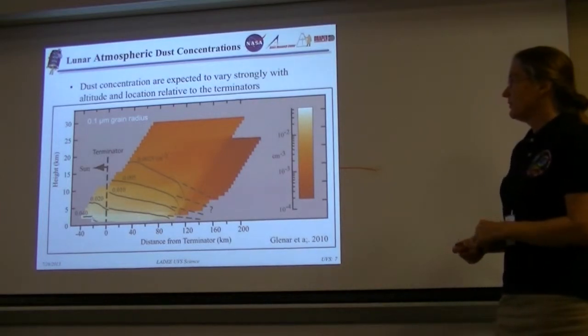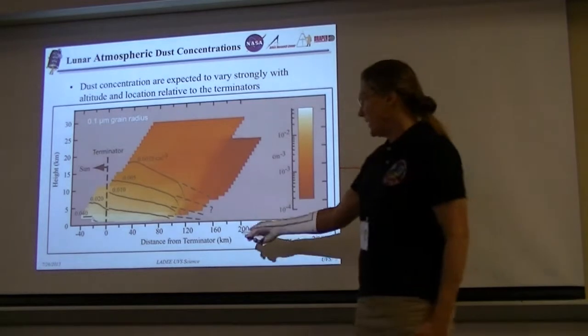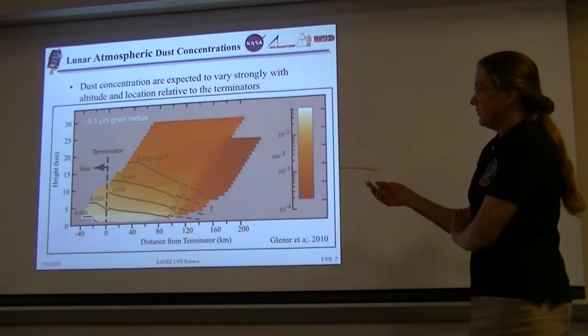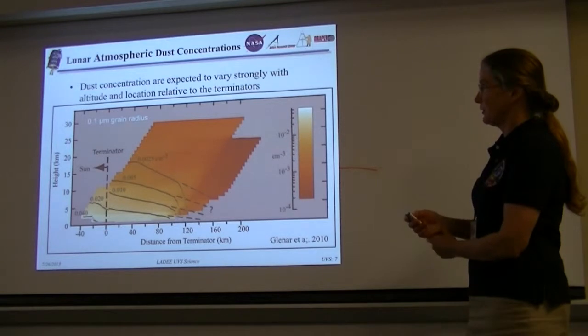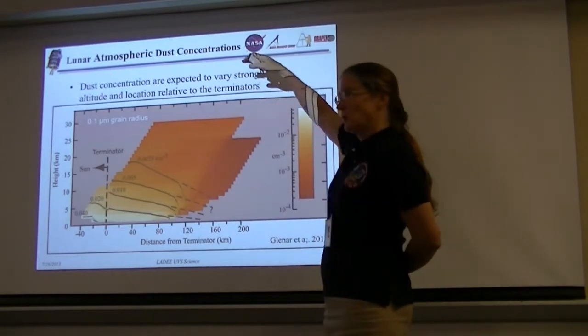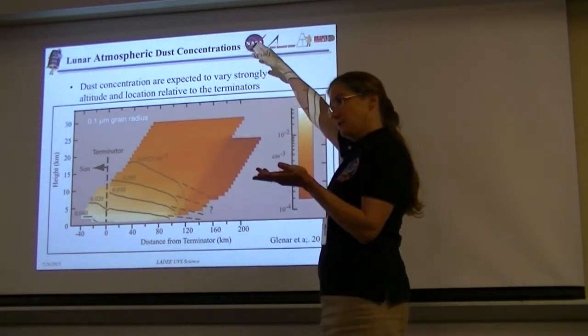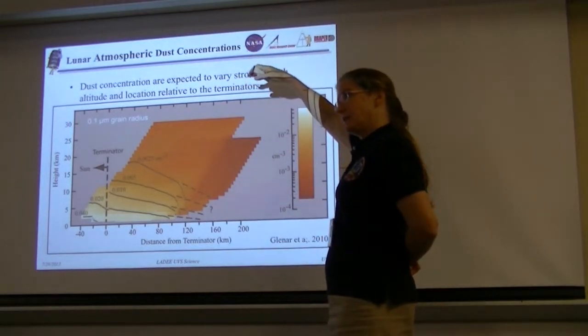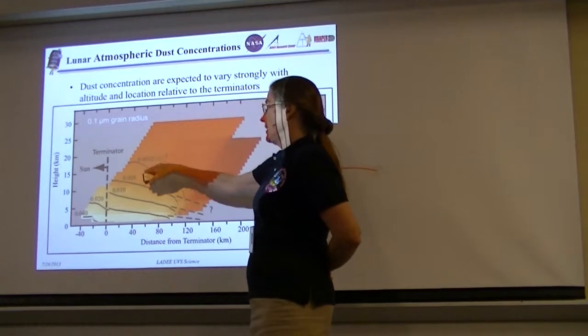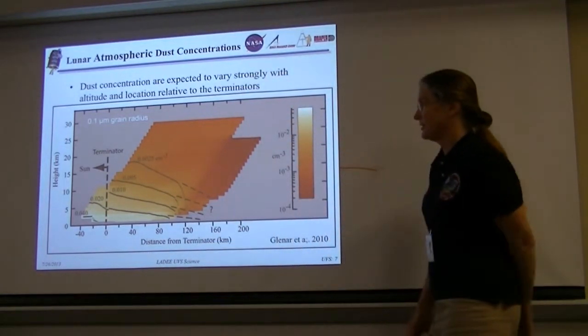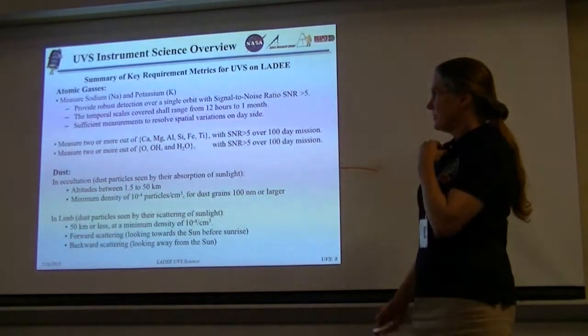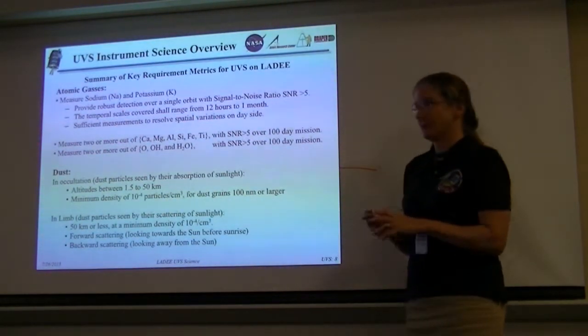The dust has been modeled so we know to what sensitivity we have to be able to look for the dust. Here's an example of dust concentration plots. This is distance from the terminator. The concentration is expected to vary strongly with altitude. Our normal altitude is 50 kilometers and we can get down to 20 kilometers. We'll be getting down to this range where we're expecting about 2.5 times 10 to the minus 3 particles per cubic centimeter.